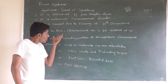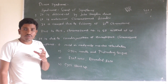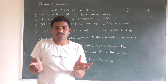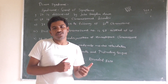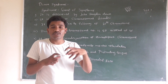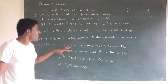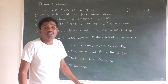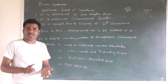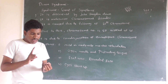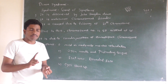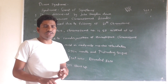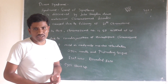Down syndrome is caused due to the non-disjunction of homologous chromosomes. Disjunction means separation; during meiosis the homologous chromosomes fail to separate. This non-disjunction creates an aneuploid condition. The hypo-aneuploid condition creates monosomy, while the hyper-aneuploid condition creates trisomy or tetrasomy.